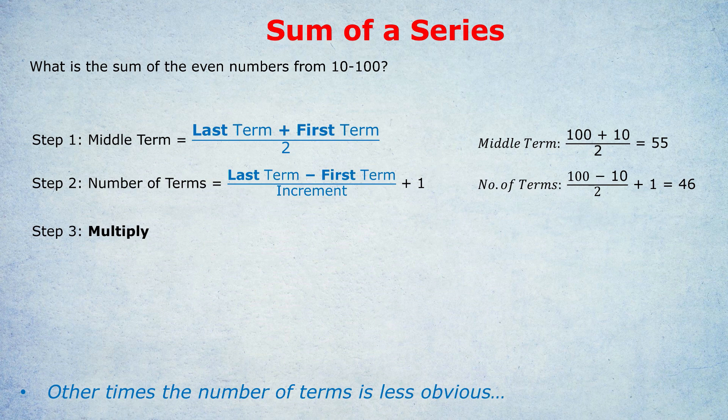90 divided by 2 is 45. 45 plus 1 is 46. And that's why we need a formula. It's not obvious that there are 46 even numbers from 10 to 100. But with the formula, we can be confident that there are.